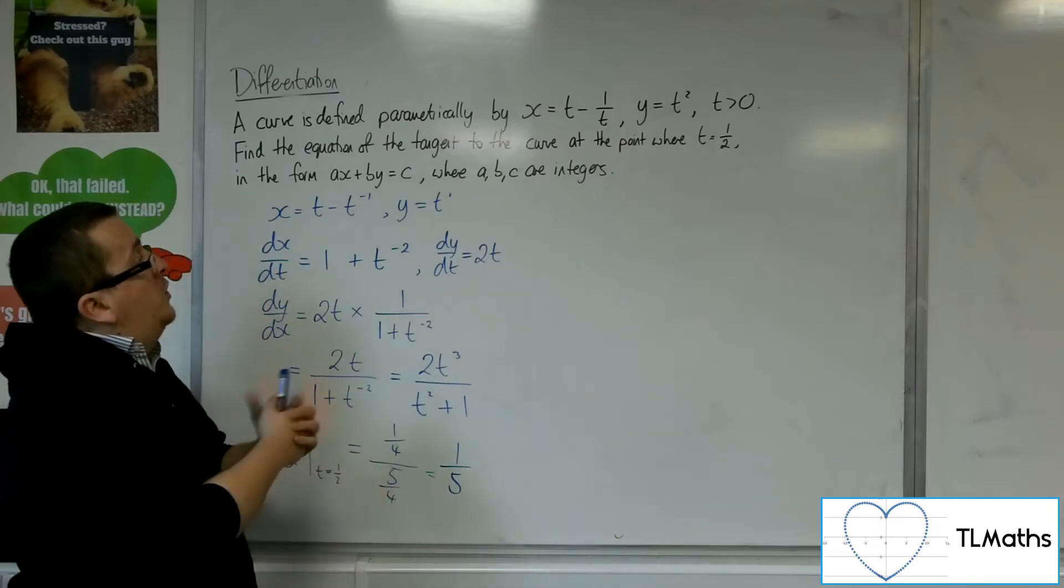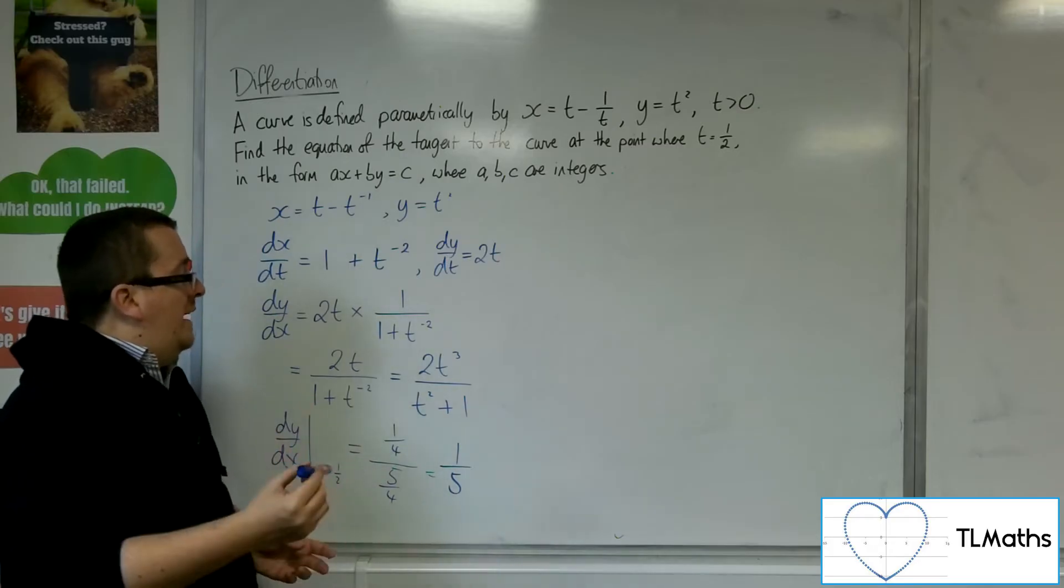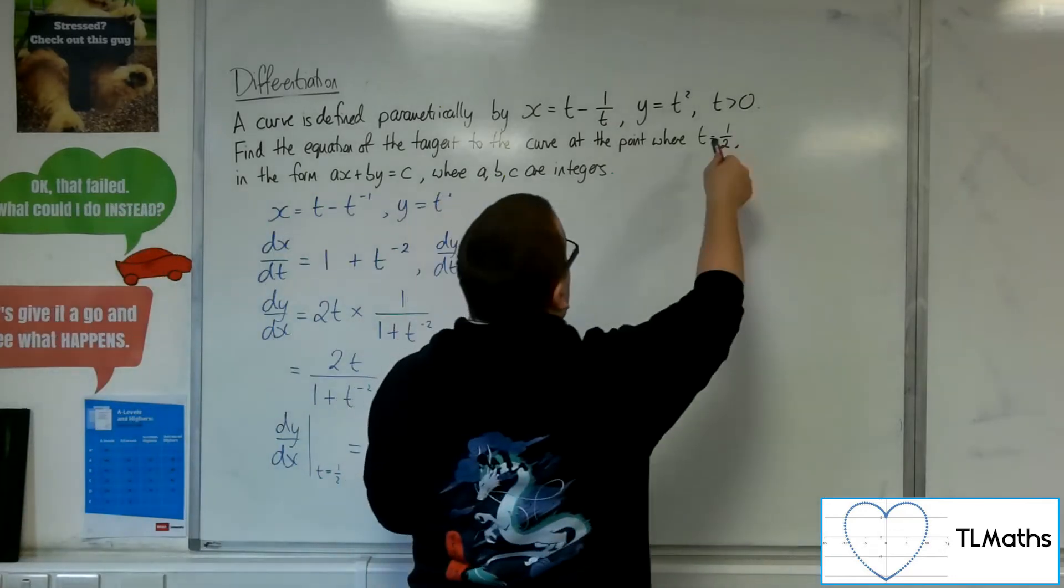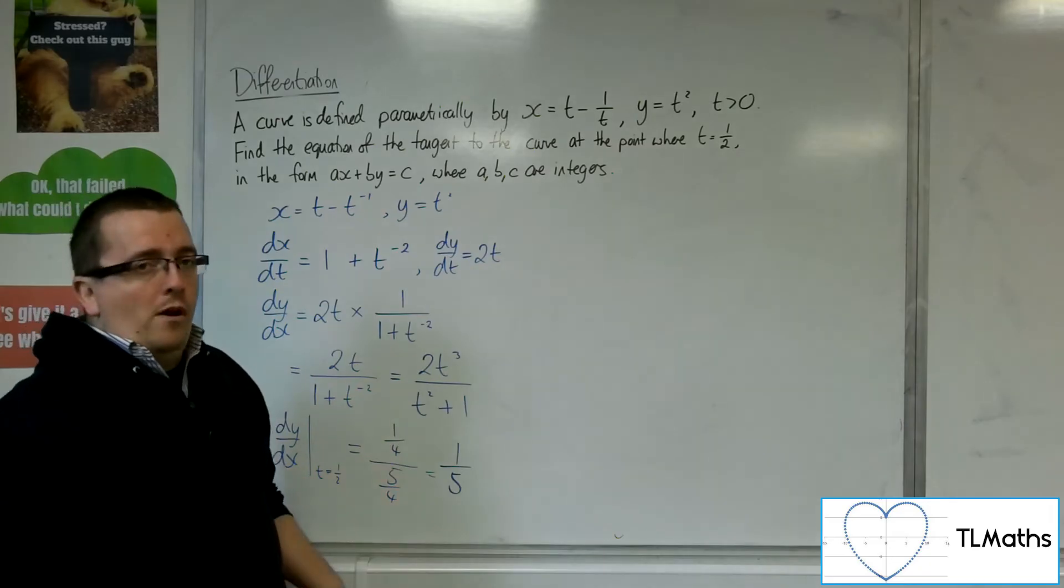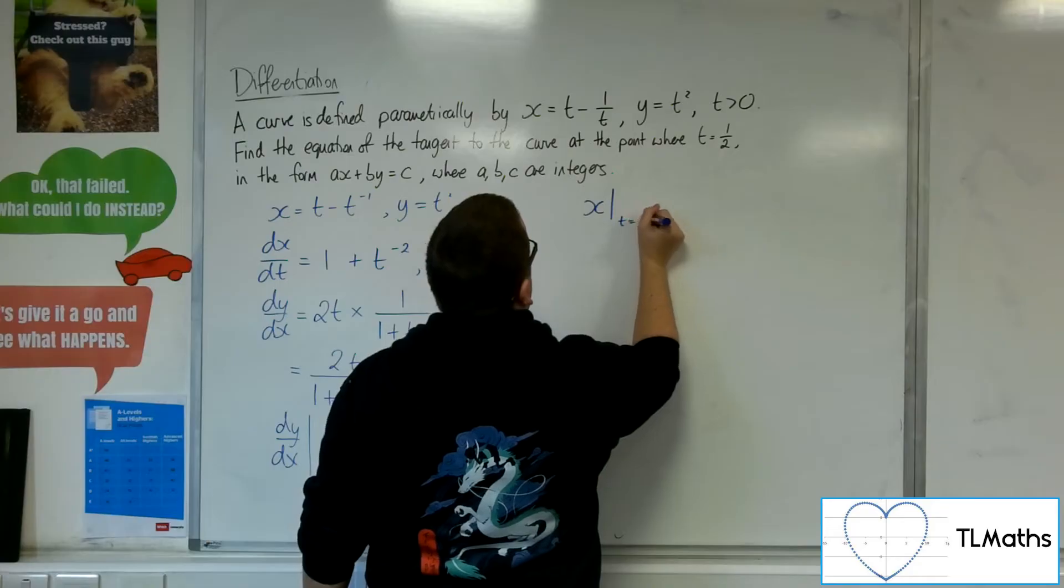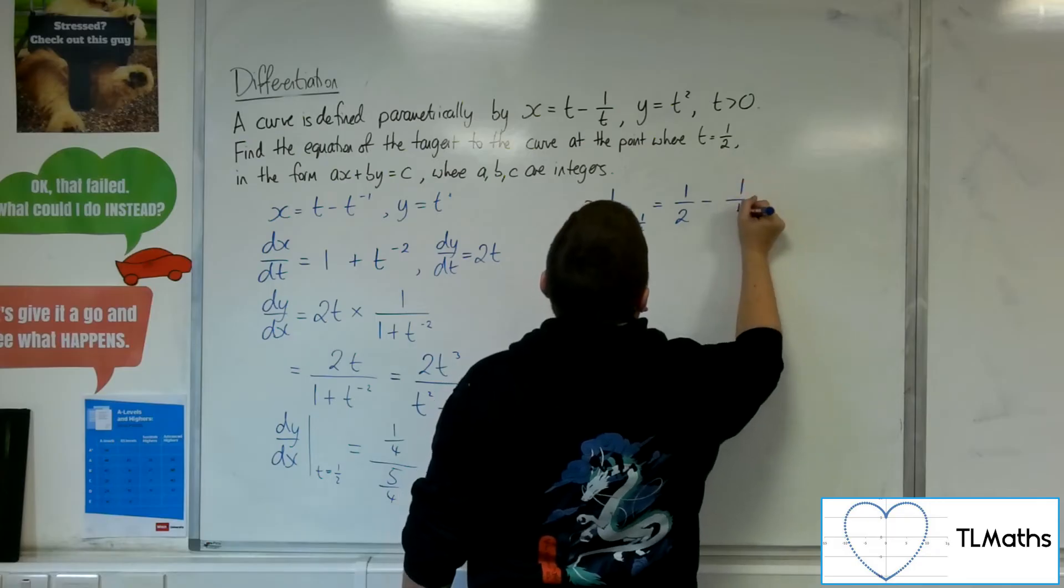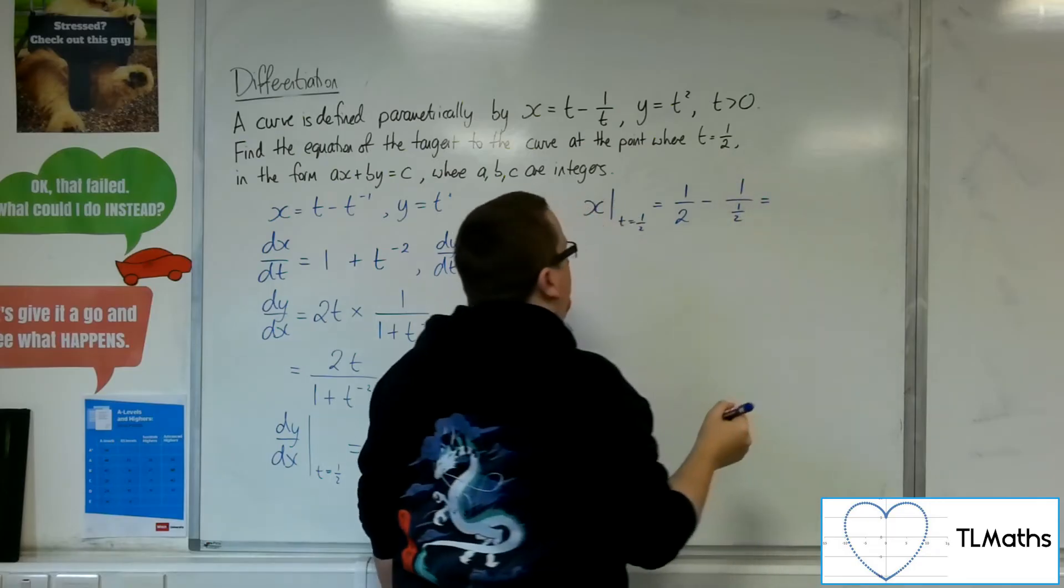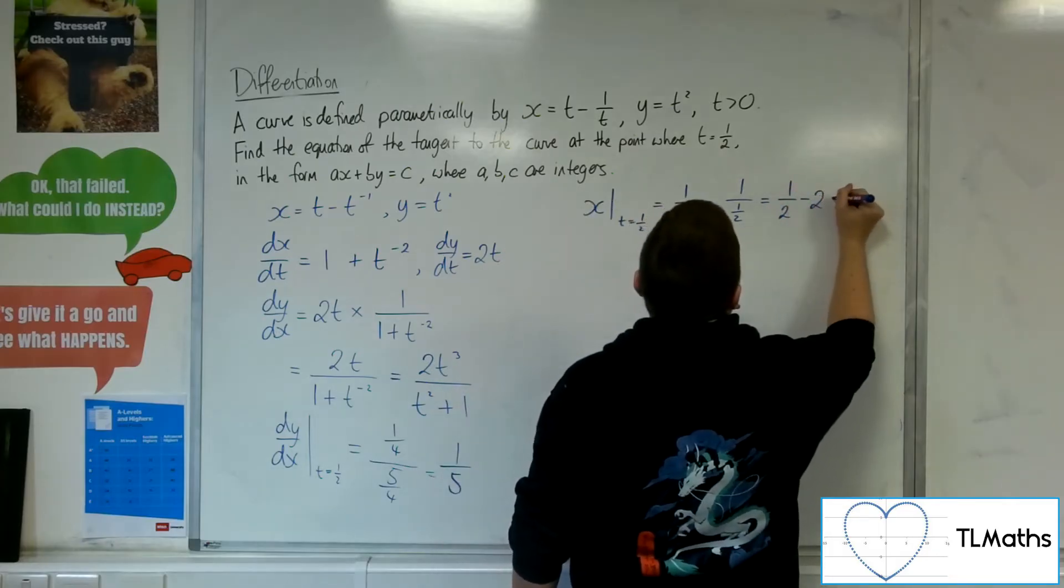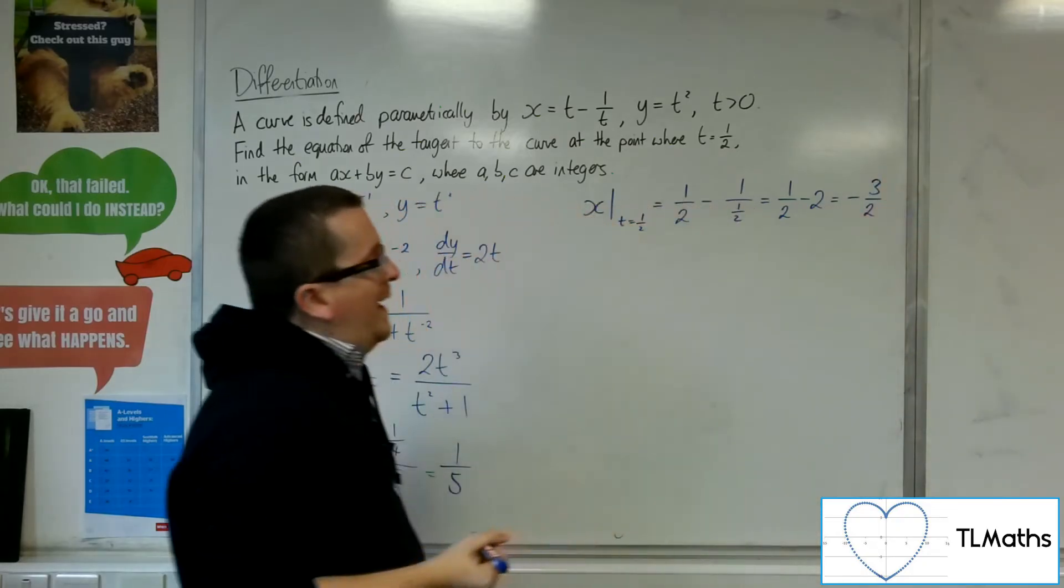However, in order to find the equation of the tangent, I'm missing some key pieces. I don't know the x and y values. So, I can easily work them out, however, by substituting t equals 1 half into the x and y. So, evaluating x when t is 1 half, I get 1 half take away 1 over 1 half. So, 1 over 1 half is 2. So, 1 half take away 2. And that's going to get me minus 3 halves. So, that's my x value.